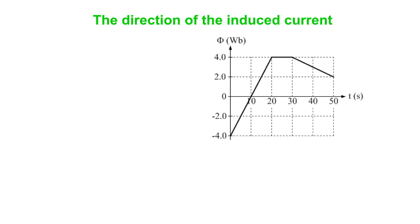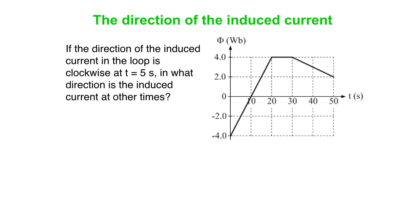Last question for you. If the direction of the induced current in a loop is clockwise at t equals 5 seconds, in what direction is the induced current at other times? So what do you have to think of here?